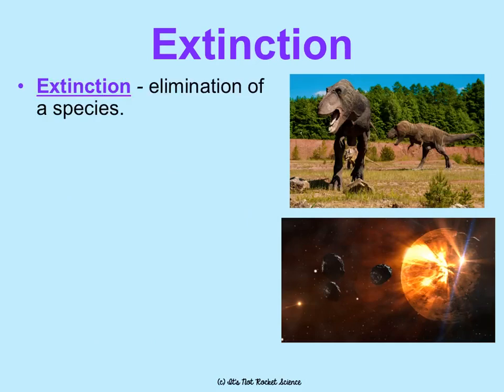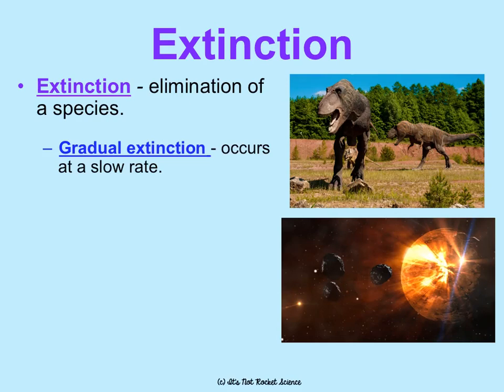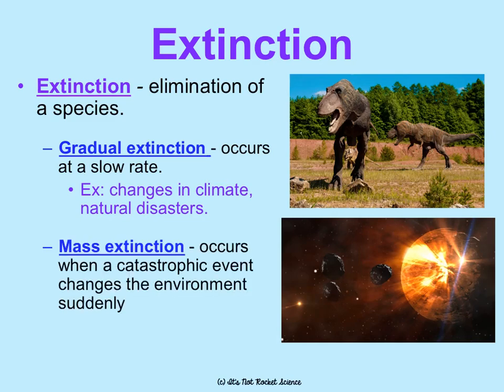Extinction is the exact opposite of speciation. This is the elimination of a species, and it can be gradual or mass. Gradual extinction occurs at a slow rate, usually due to a slow change in climate or a series of natural disasters — any species that is endangered is in the process of gradual extinction. Whereas a mass extinction occurs when a catastrophic event changes the environment very suddenly and the entire species gets wiped out at once. This could be a massive volcanic eruption, a meteor hitting the earth, or an ice age type situation.